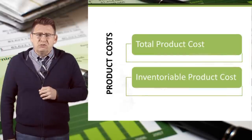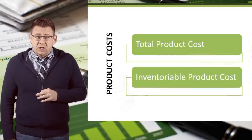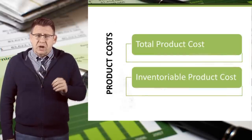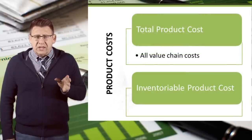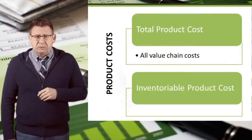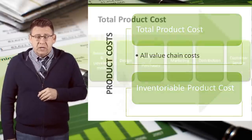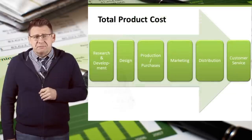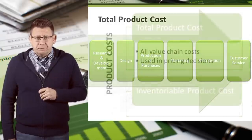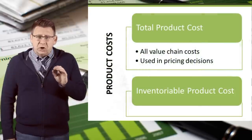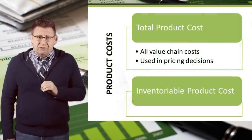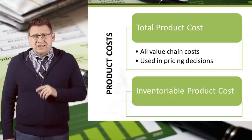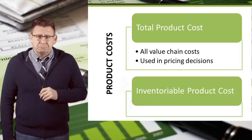Most companies use two different definitions of cost: total product cost and inventoryable product cost. The total cost is used for internal decision making. It includes all the costs of the value chain. Management needs to know total costs so it can price goods high enough to cover these costs and still make a normal profit.